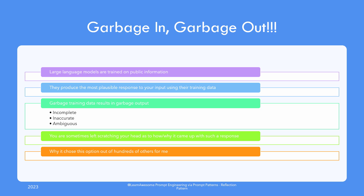Training data is not always to blame. Reasons can include making assumptions and decisions out of a variety of possible options. There are also cases where you are left wondering why or how the model came to a particular conclusion.